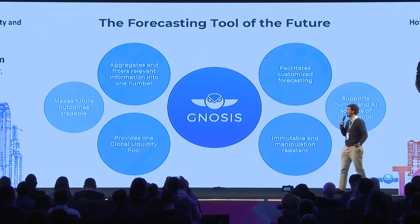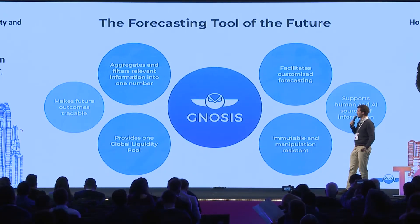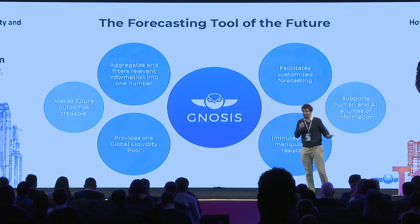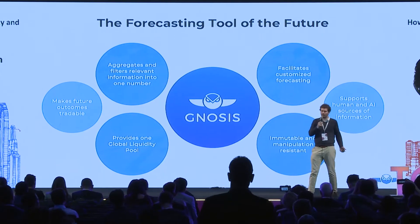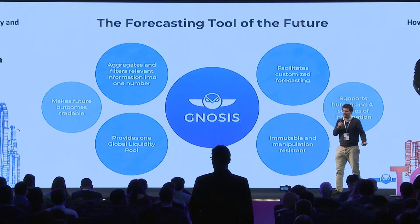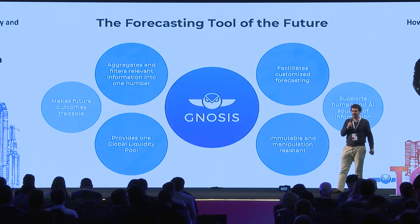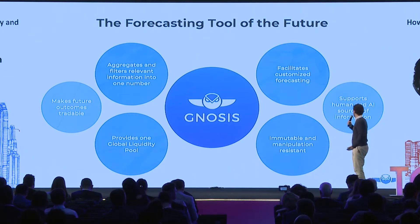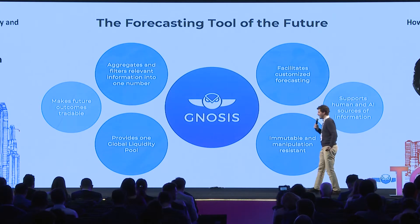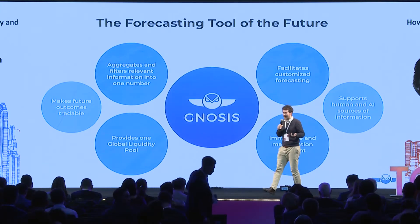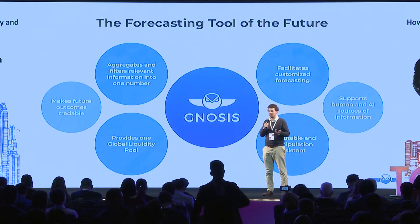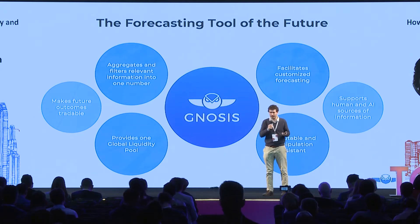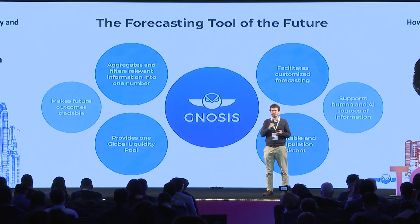With Gnosis and prediction markets in general, we make future outcomes tradable and have a great way to aggregate relevant information while filtering out noise. A big advantage of having this on the blockchain is that we create a global liquidity pool, and we can aggregate information not only from humans but also AIs could participate in those markets.